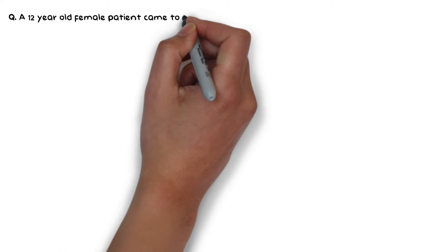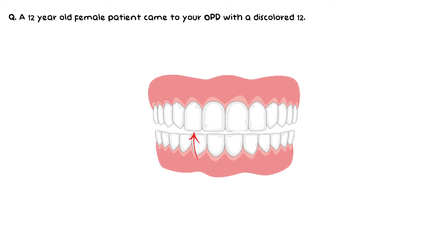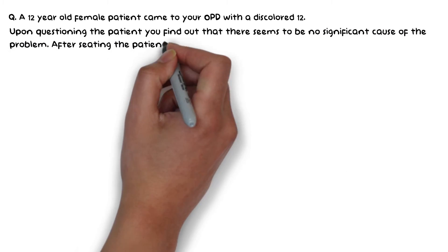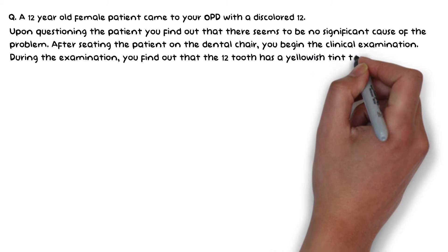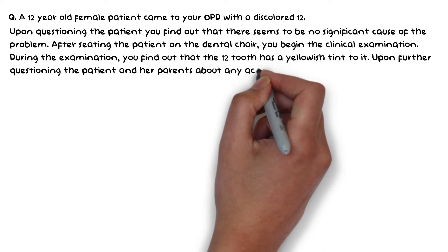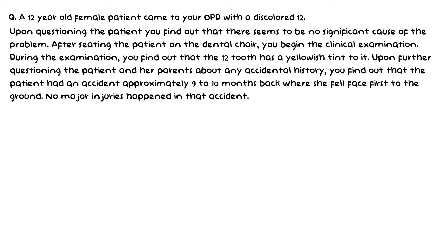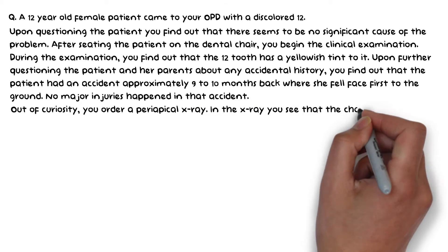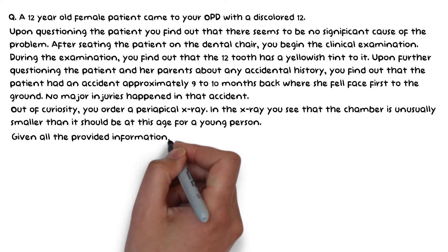Now let's look at a clinical question to understand the topic even better. A 12-year-old female patient came into your OPD with a discolored tooth 1.2 in FDI notation, which means the upper right lateral incisor. Upon questioning, there seems to be no significant cause initially noted. Examination reveals that the tooth has a yellowish tint to it. Further questioning of the patient and her parents reveals that she had an accident approximately 9 to 10 months ago where she fell face first to the ground, with no major injuries. Out of curiosity you order a periapical X-ray, and in it you see that the chamber is unusually smaller than it should be at this age. Given all this information, what is your most likely diagnosis?